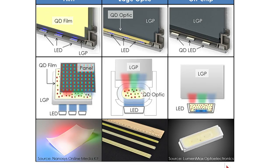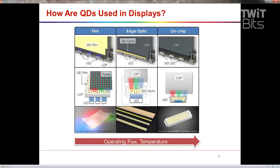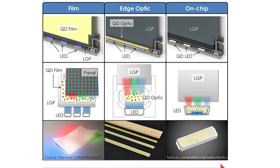So here you'll see three different instantiations of quantum dots and how they're used in displays in an LCD. On the very far left is a quantum dot film, and then in the middle you see a schematic of how it's used — it's actually sitting between the light guide plate and the panel. The LEDs are shooting blue light into the light guide plate, which is redirecting that light out the front of the screen. And the quantum dot film is absorbing a lot of that and then re-emitting.